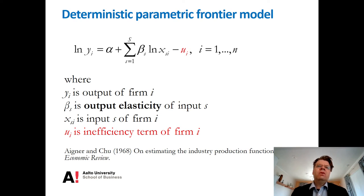And rather, in contrast to DEA, they also have the parametric specification of the production function, namely the Cobb-Douglas production function over here. This is the so-called deterministic parametric frontier approach.